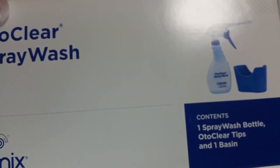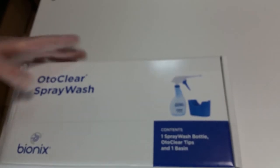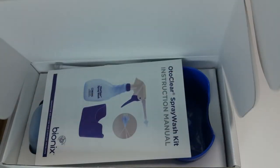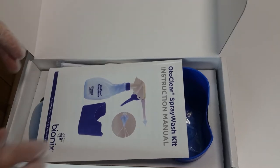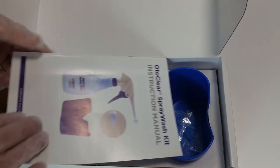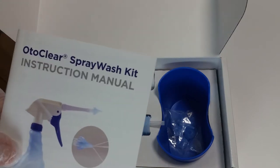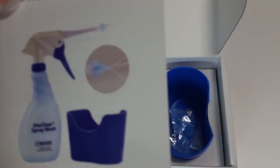It contains a spray wash bottle, tips, and a basin. If you open the box, the instruction manual is right on top. It's a really useful guide with detailed instructions about the use and maintenance of the kit.